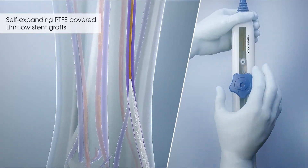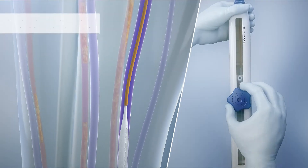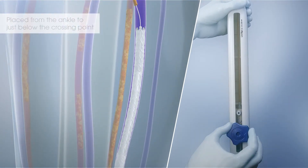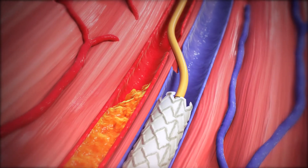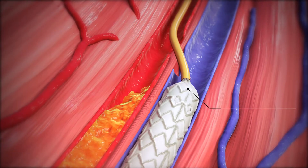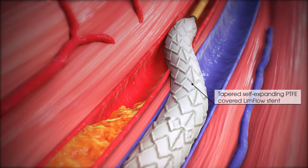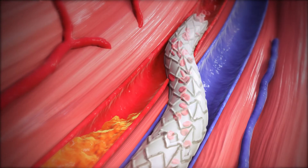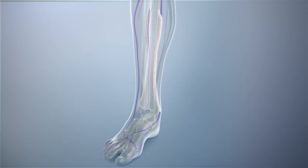Self-expanding PTFE-covered LimFlow stent grafts are placed from the ankle to just below the crossing point, creating a permanent conduit for continuous arterialized blood flow. Finally, a tapered self-expanding PTFE-covered LimFlow stent is deployed to optimize the transition and flow from the artery into the vein, completing the arterialized circuit.